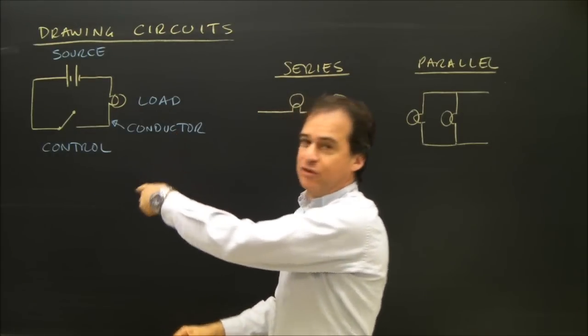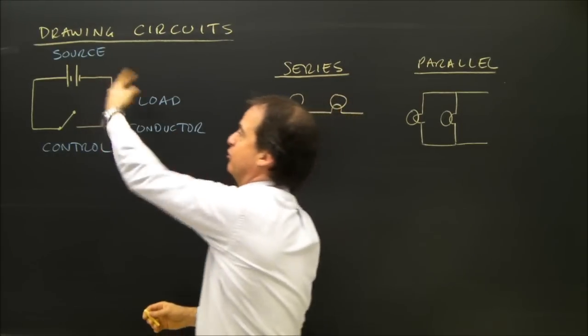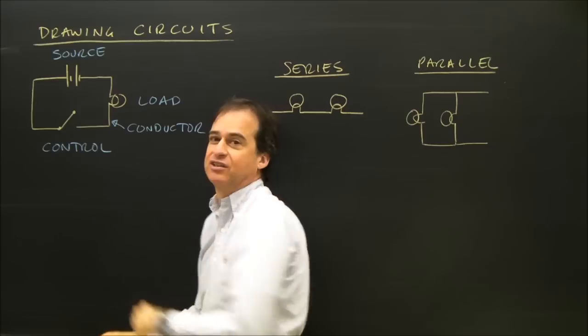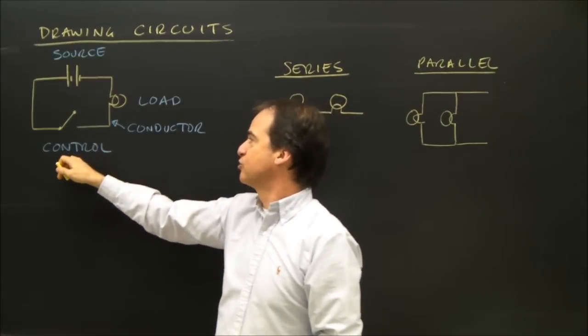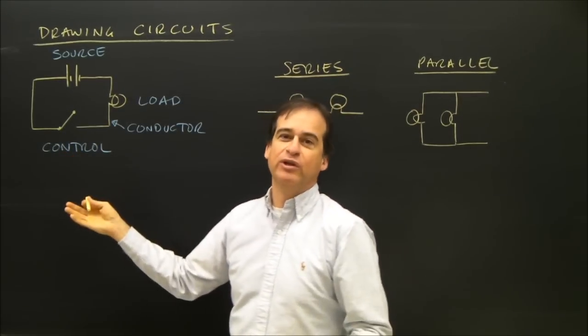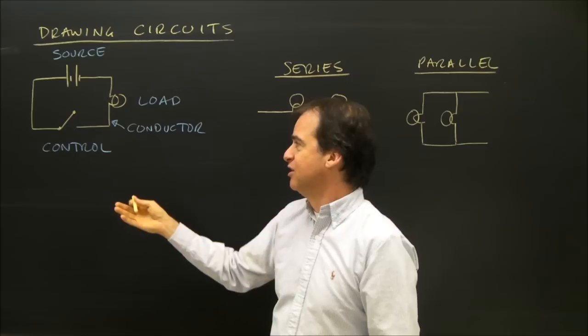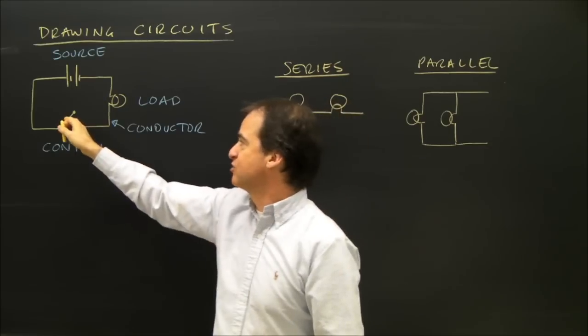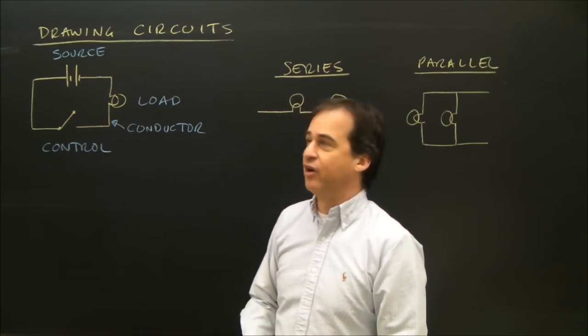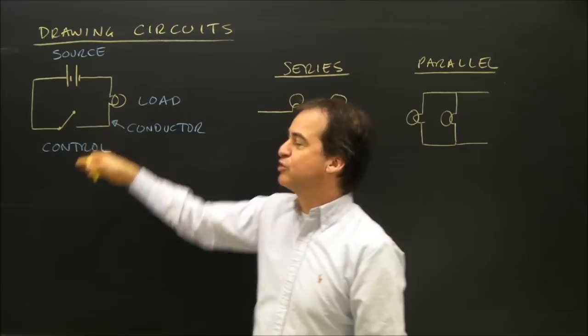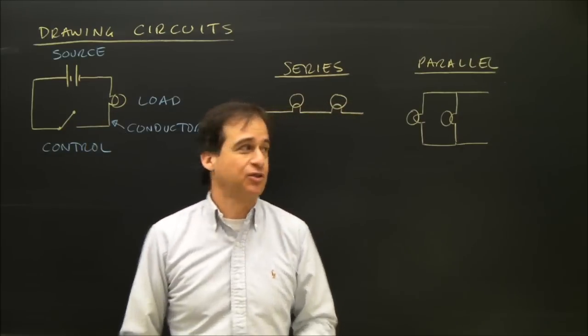I need a conductor. That's the wire used in the circuit to get the electricity to flow. And I have a control. A control is a switch — this turns the electricity flow on and off. So those are the four parts in a circuit.